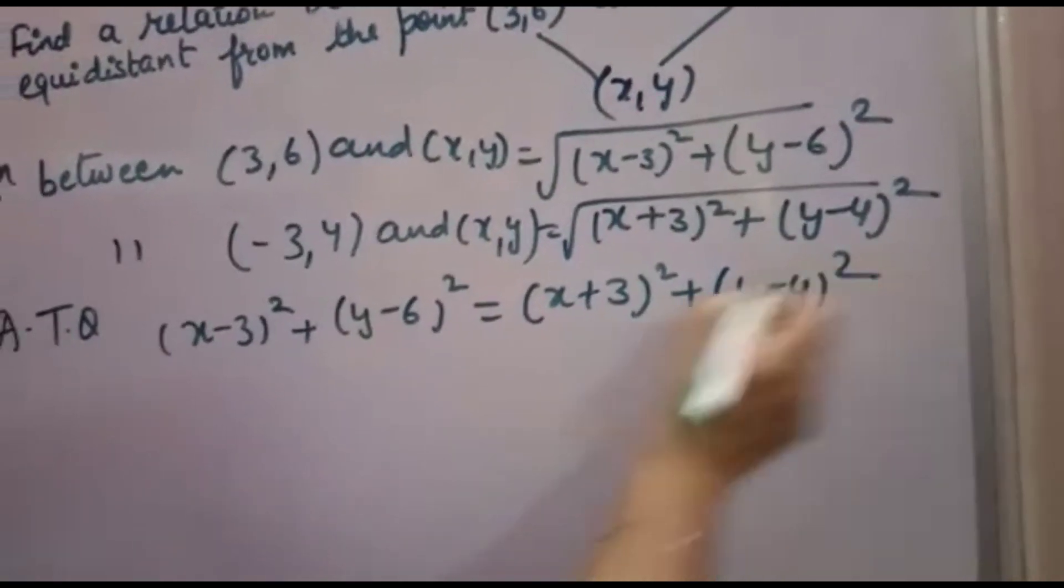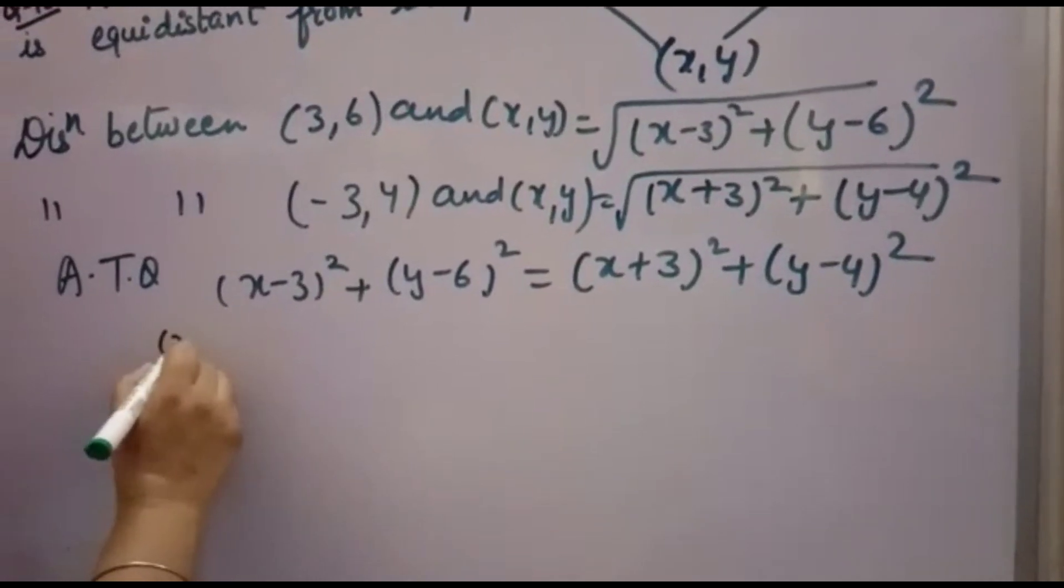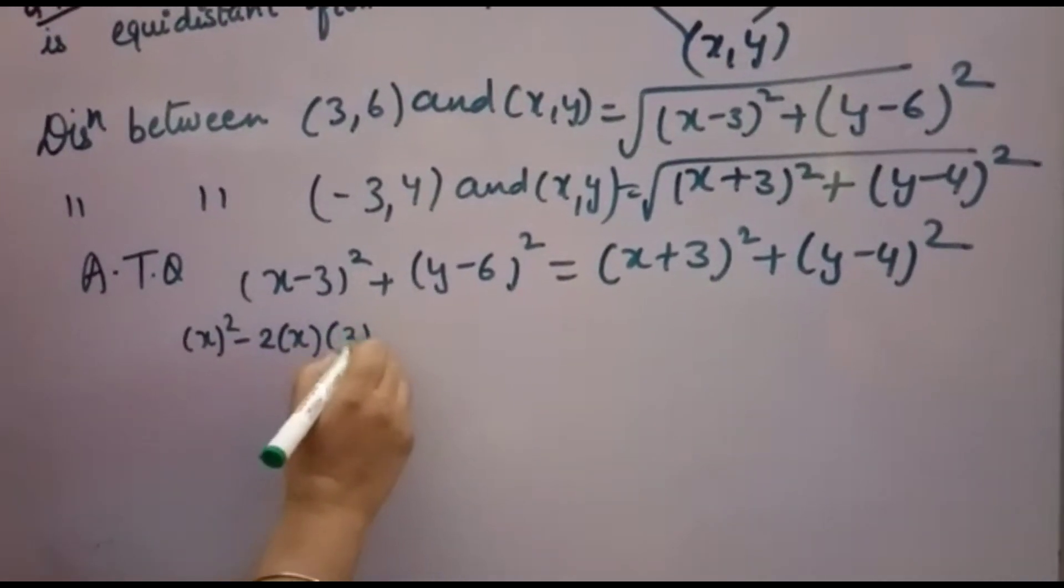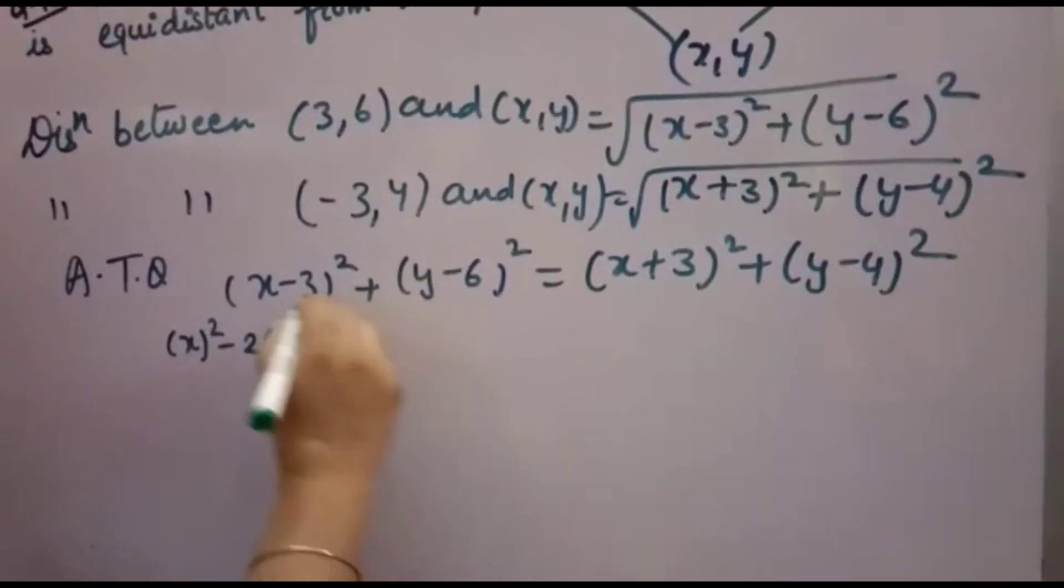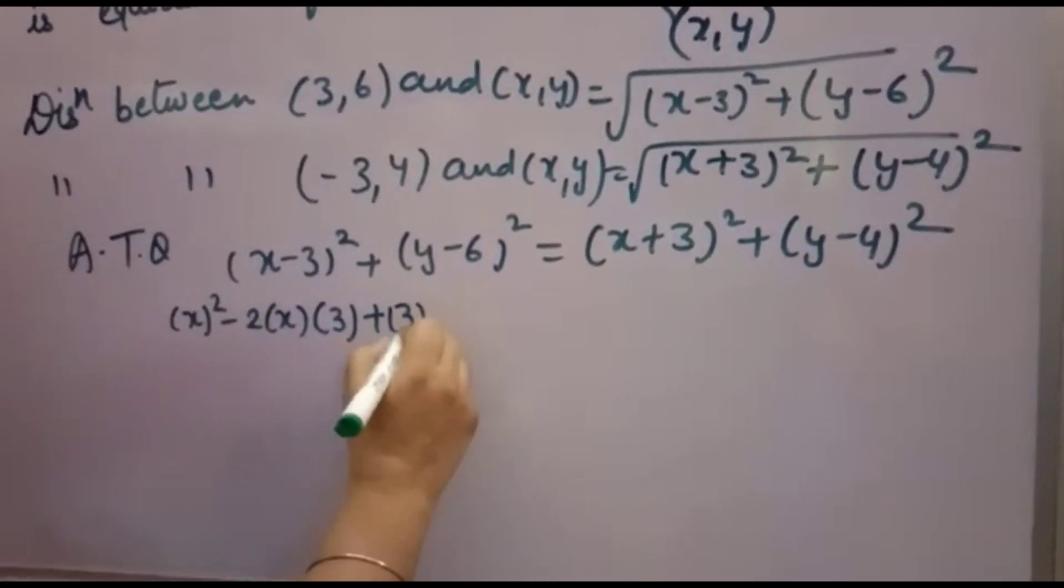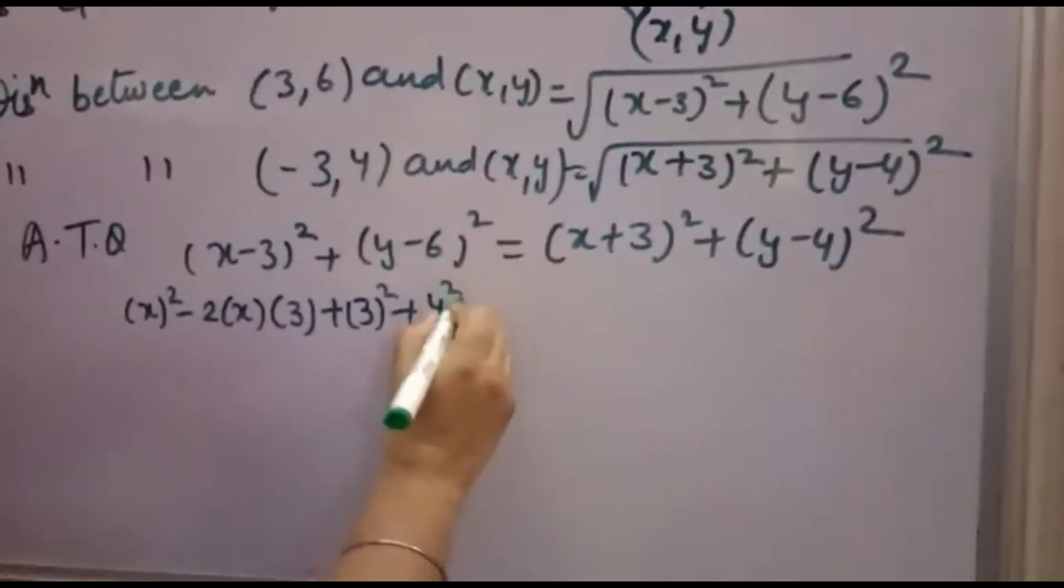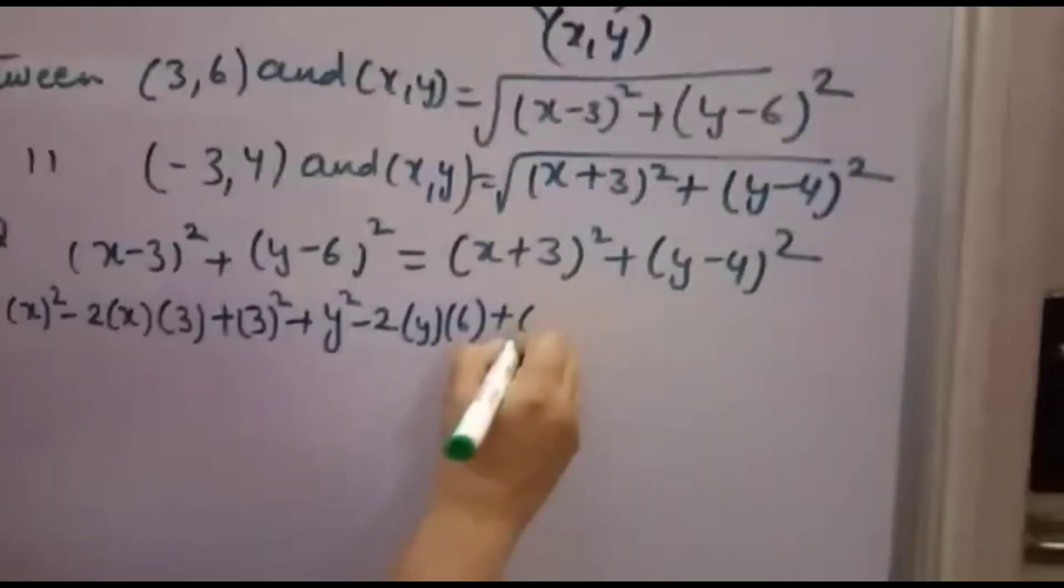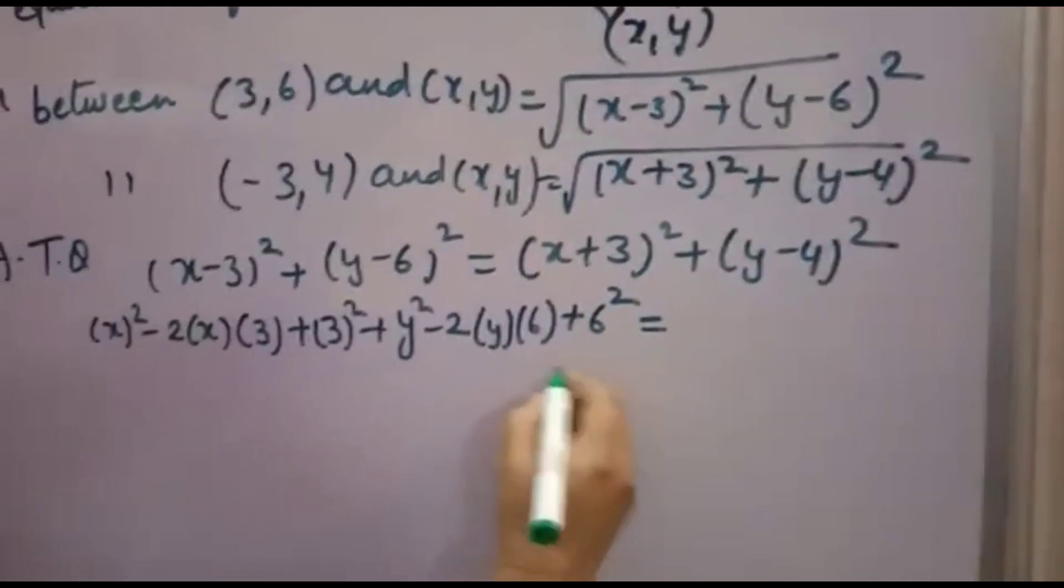Now (A minus B) whole square equals A² minus 2AB plus B². So X² minus 2 times X times 3, plus 3², same way Y² minus 2 times Y times 6 plus 6².